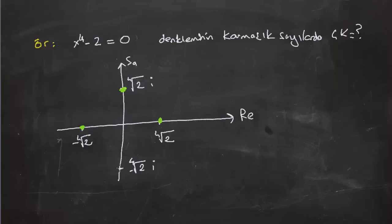Dikkat ederseniz köklerin hepsinin boyu dördüncü dereceden kök iki. Ve böylece aslında kökleri karmaşık düzlemde çizmiş olduk. Ve bu denklemin real sayılarda iki kökü olmasına karşın karmaşık sayılarda aslında dört kökü var.